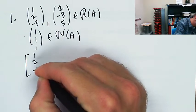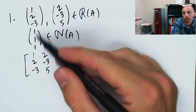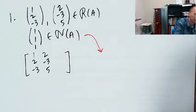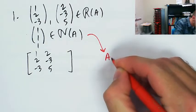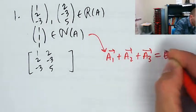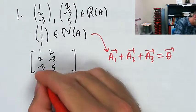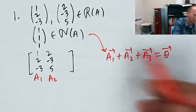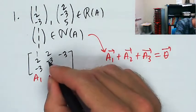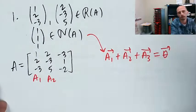So I put [1, 2, -3] and [2, -3, 5] as the first two columns, then figure out the third column using the null space condition. If [1, 1, 1] is in the null space of A, then 1·A1 + 1·A2 + 1·A3 equals the zero vector. So in the first component, 1+2=3, so I need -3. For the second: 2-3=-1, plus 1 is 0. For the third: -3+5=2, minus 2 is 0. This gives the third column as [-3, 1, -2].